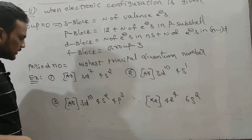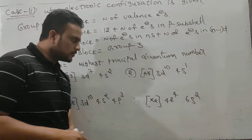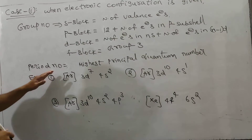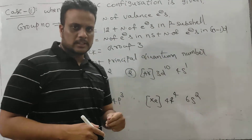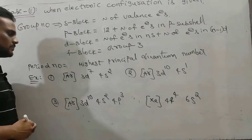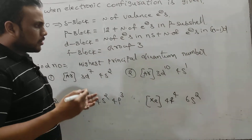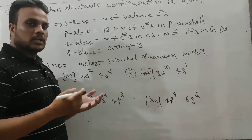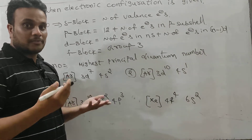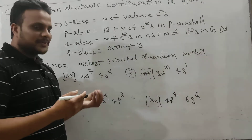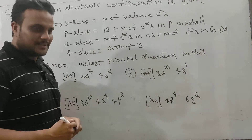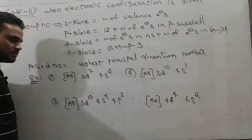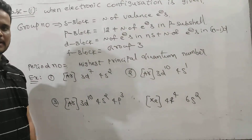Let's talk about some questions. And we have period number as well. Period number is the highest principal quantum number. Principal quantum number is the orbit number. So in the given electronic configuration, you can see the highest principal quantum number — there should be no confusion. You can identify which value is bigger. So from this given configuration, how to find group and period number?